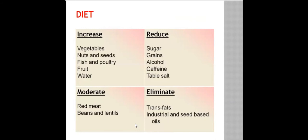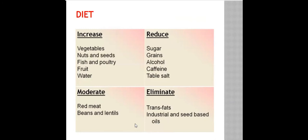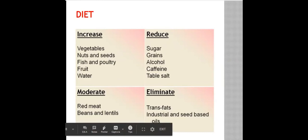Things that we want to increase: vegetables, nuts and seeds, fish and poultry, fruit, actual water, a moderate intake of red meat, and beans and lentils. Things that we want to reduce: sugars and grains and alcohol and caffeine. So what is going on with all of this?